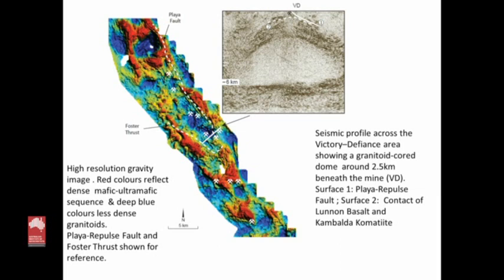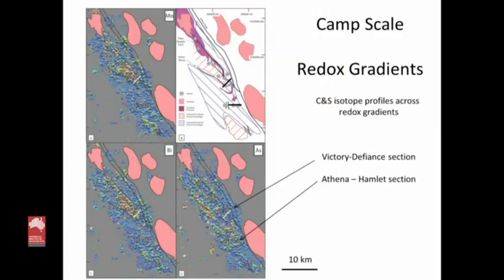This is the chemical architectural view — the way a chemist like Scott Halley might see it. What I've plotted at the camp scale are domains of dominantly oxidised alteration shown in red. The central corridor of the camp is a big red zone, and then there's a blue zone which is relatively more reduced. This has been mapped from multi-element datasets — borehole geochemistry — where elements like molybdenum and bismuth sit within the relatively oxidised domains, and an element like arsenic sits in the relatively reduced domains. There are pretty strong changes that look like they're influenced by structure.